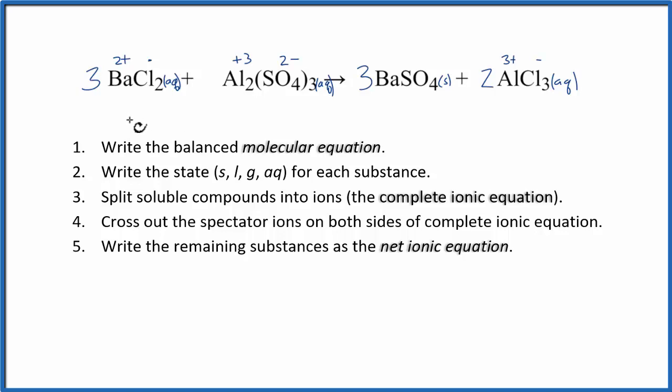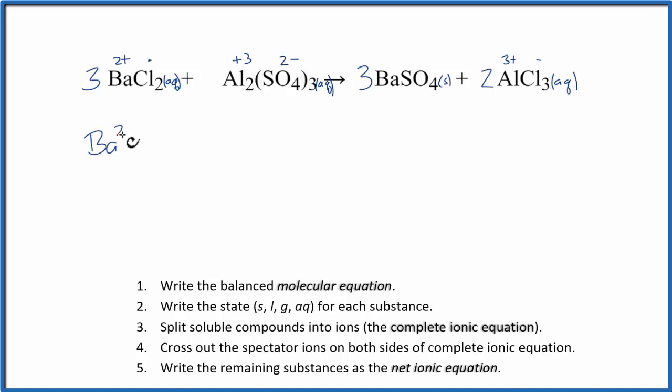We have Ba²⁺, and I won't write aqueous after everything until the end, then we have the chloride ion Cl⁻ plus aluminum that's three plus, plus the sulfate ion SO₄²⁻.